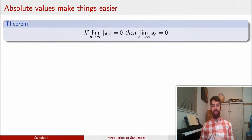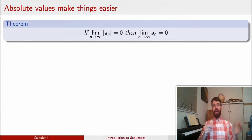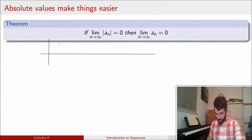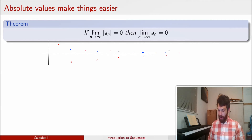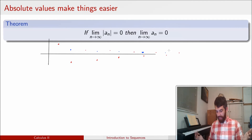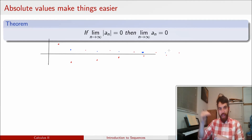There's one other trick: sometimes we can make our lives easier by putting absolute values around things. If the limit of the absolute value of a sequence goes to 0, then so too must the sequence itself. Imagine a sequence bouncing up and down but with terms getting closer to 0. If we take the absolute value, the negative terms become positive, and clearly everything is going down to 0 — so it's an intuitive but very helpful theorem.